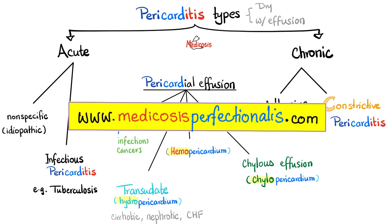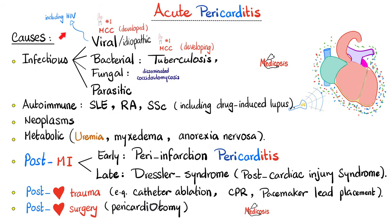You can download these notes on my website, medicosisperfectionitis.com. What causes acute pericarditis? We have infectious causes, autoimmune causes, neoplastic causes, metabolic causes, and post-MI causes. Infectious causes include viral, bacterial, fungal, and parasitic. Viruses include Coxsackievirus B, echoviruses, enteroviruses, and Epstein-Barr virus. HIV can also lead to acute pericarditis. Viral and idiopathic causes are the most common in developed countries, but tuberculosis is most common in developing countries. Fungal causes include histoplasmosis, blastomycosis, and coccidioidomycosis. Parasites can also lead to acute pericarditis.